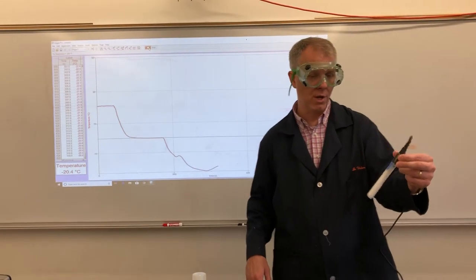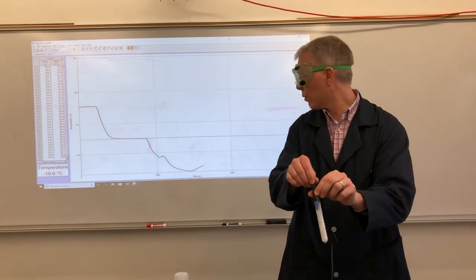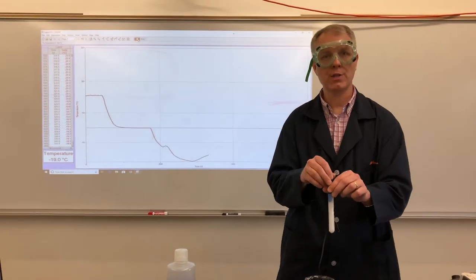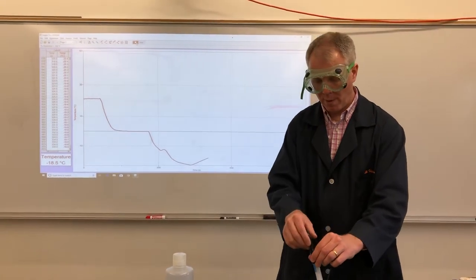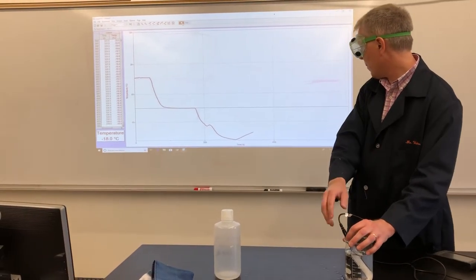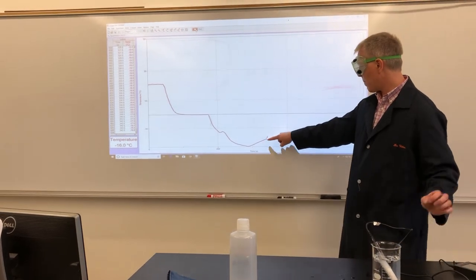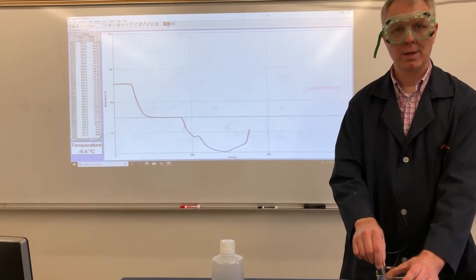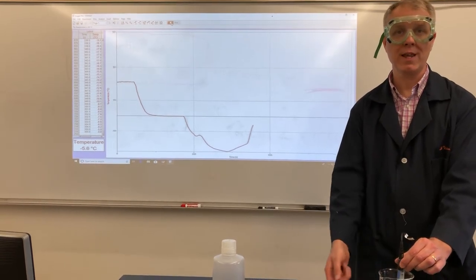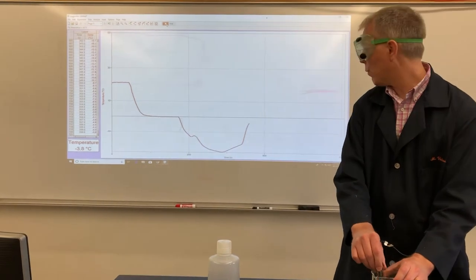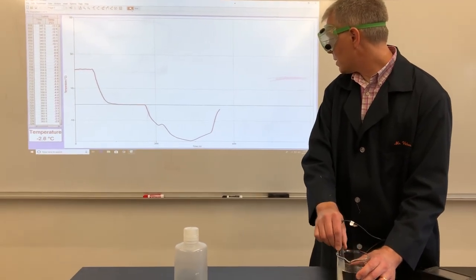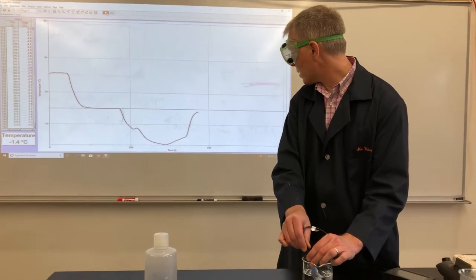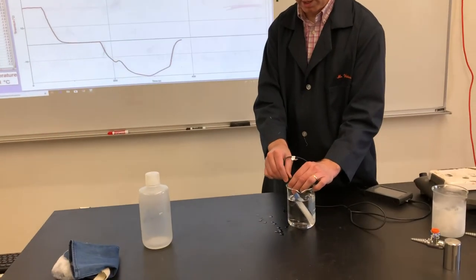Now we're going to warm this up. I'm going to accelerate the warming process by putting it into my room temperature water bath. Room temperature water, room temperature air — yet when I put it in the water you'll see it starts warming up a lot faster. Why do you think it warms up faster in the water than in the air even though both are at room temperature? Because water is a much better conductor of heat than air is. So water sends heat into the ice much faster than the air does, increasing the kinetic energy of those molecules faster.